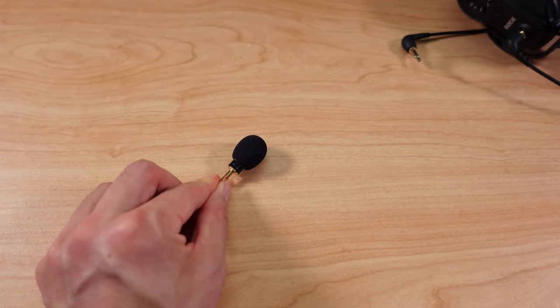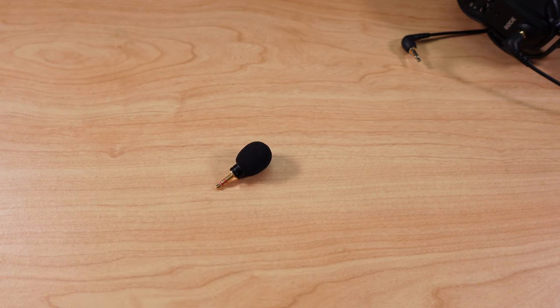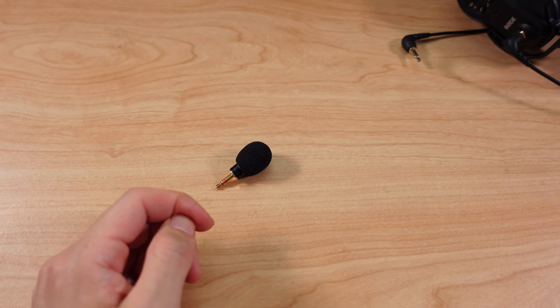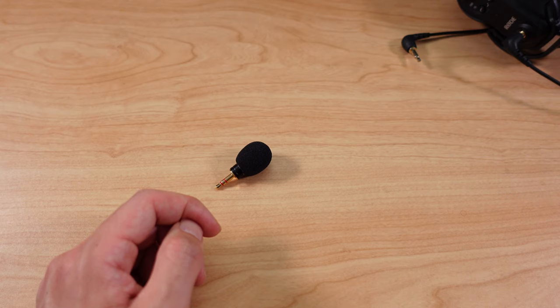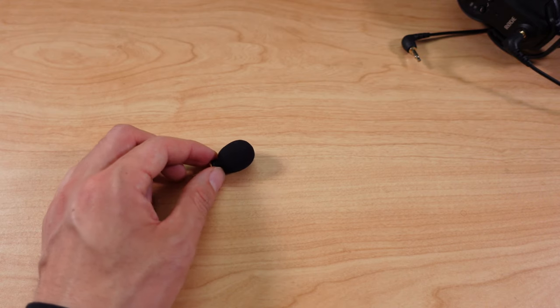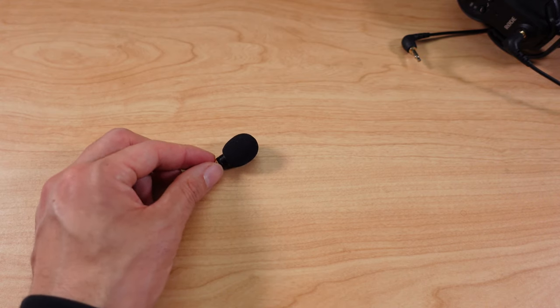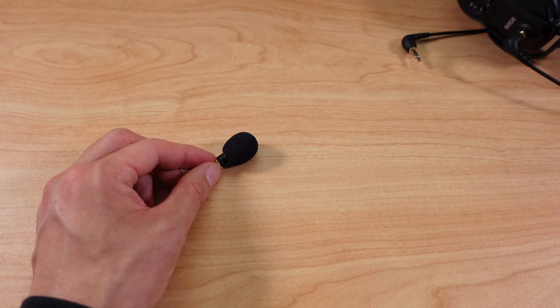All right, so now I'm pointing the Olympus ME52W, less than six inches from my mouth, just like you would position a lav microphone if I were to clip this on me. This is what it sounds like. I'm trying not to handle the wire at all but you might hear some handling noise. This is what a mono mic sounds like, Olympus ME52W.